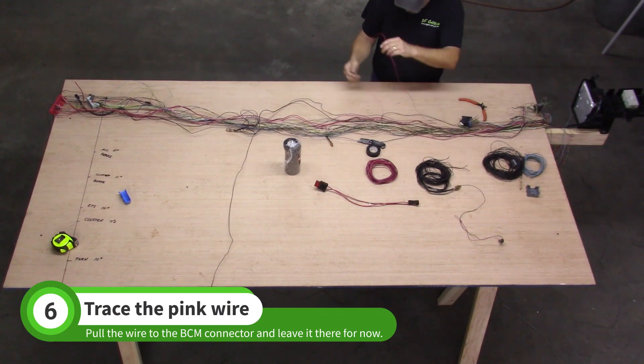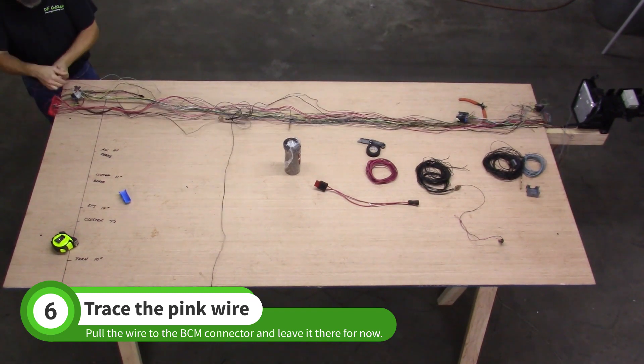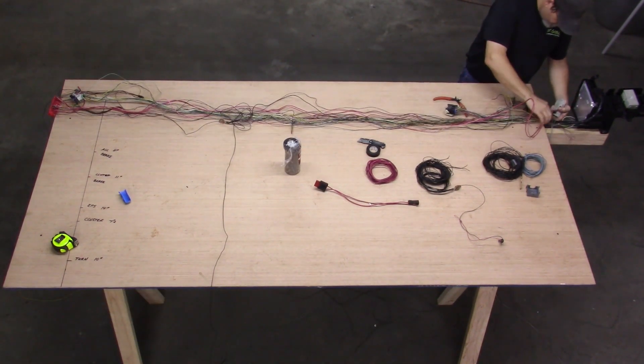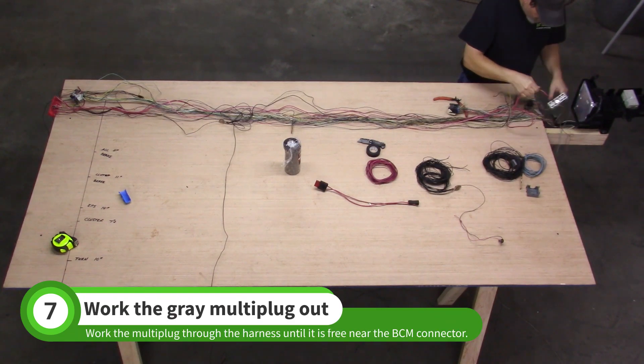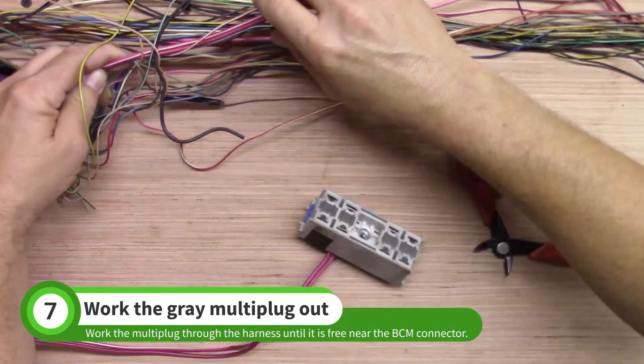Trace the pink wire to the BCM connector and leave it over the edge of the table. Work the medium size gray multi-plug through the harness to the BCM connector.